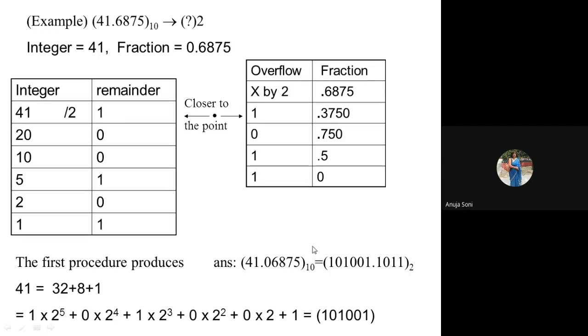So ultimately, this will be the final converted value in a numbering system having base 2 — from decimal to base 2.